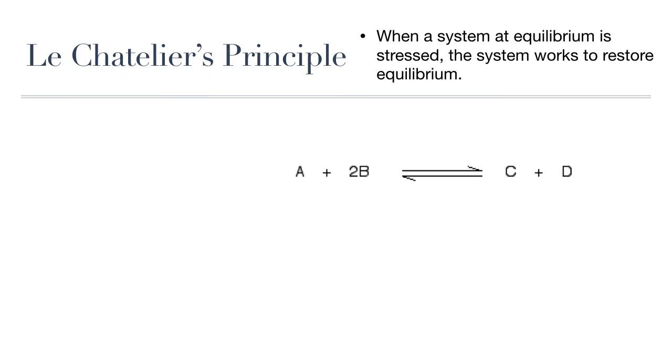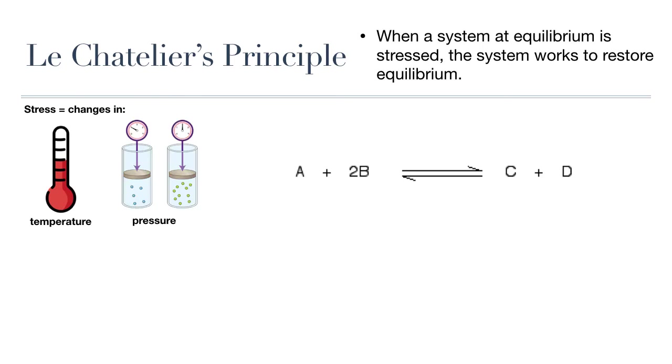So Le Chatelier's principle, also known as the equilibrium law, states that when a system experiences a disturbance or stress, it will respond to restore a new equilibrium state. So the system is usually a reversible reaction and the disturbance can be either a change in temperature or a change in pressure or a change in the concentration of either the reactants or the product. Now in living systems where significant changes in temperature or pressure would pretty much lead to death, Le Chatelier's principle only applies to changes in concentration really.